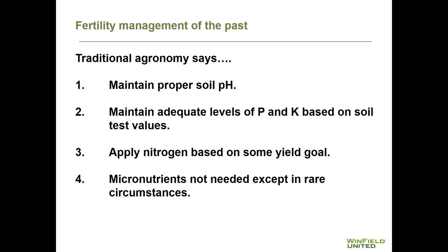If we think about fertility management in the past, traditional agronomy has told us to first of all maintain proper soil pH. We strive for soil pHs as close to neutral as possible to ensure availability of micronutrients as well as macronutrients like phosphorus. We strive to maintain adequate levels of phosphorus and potassium based on soil testing. We apply nitrogen based on some yield goal that we're striving for. And traditionally, agronomy has told us that micronutrients are not needed except in rare circumstances — for example, on specific crops with very high micronutrient requirements or on very specific types of soil.